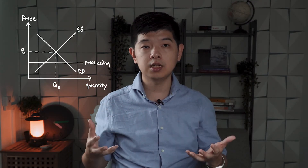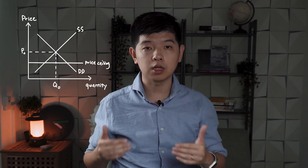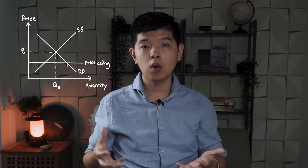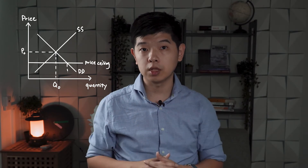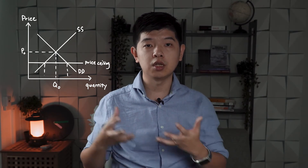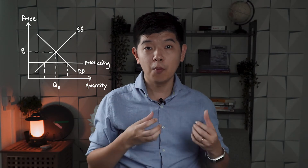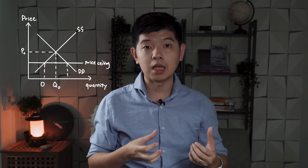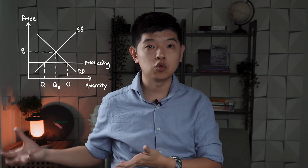When you set a price ceiling below the equilibrium price, what happens to the quantity demanded? The quantity demanded of the good will actually increase, because at a lower price more people will be able to pay and buy the good. So the quantity demanded for the good will increase.